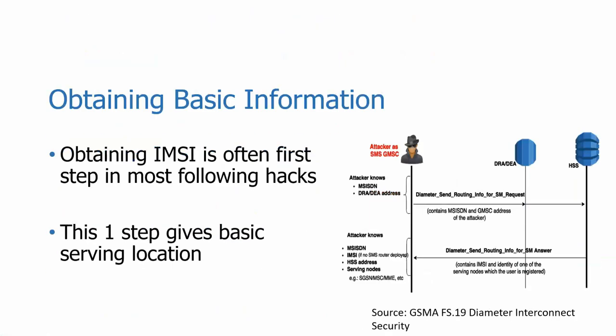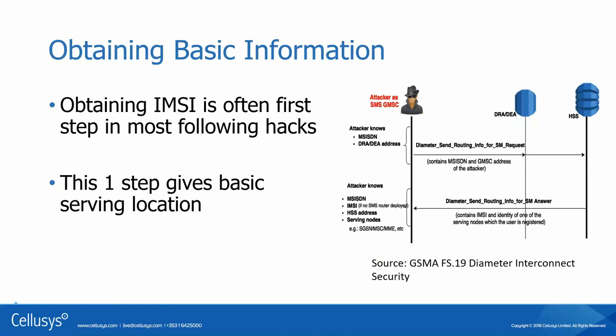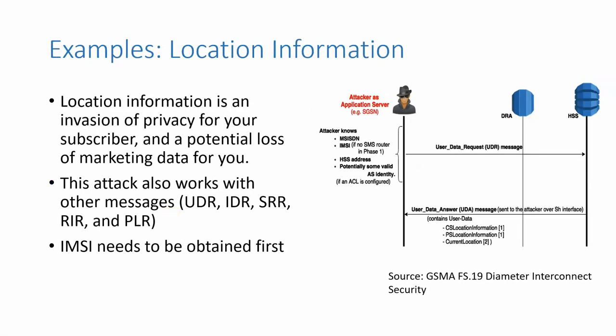Let's look at some sample attack vectors. The first is obtaining the IMSI — it's almost always the first step. An attacker spoofs themselves to look like an SMS GMSC. They may have leased access, hacked access, or paid a carrier technician under the table. Some carriers will lease you access so you can legitimately be on the network as a GMSC or any other network element. The attacker sends a diameter Send Routing Information for SMS message, and gets back the IMSI. They'll also get HSS info, serving node addresses, and other information. But the IMSI is the really important piece — with that, we can start doing other things.